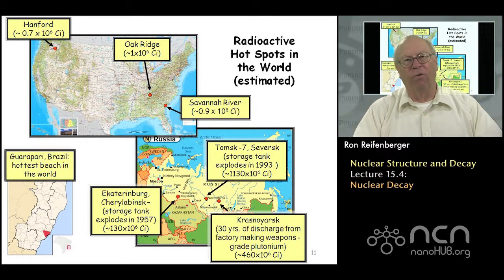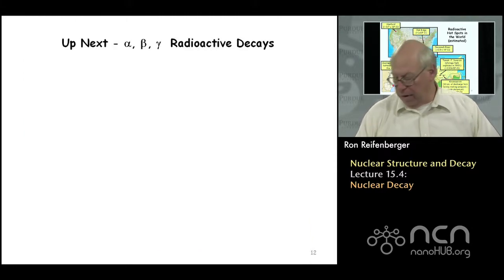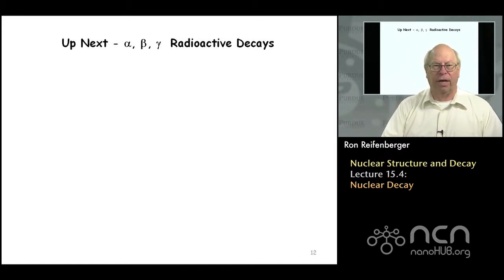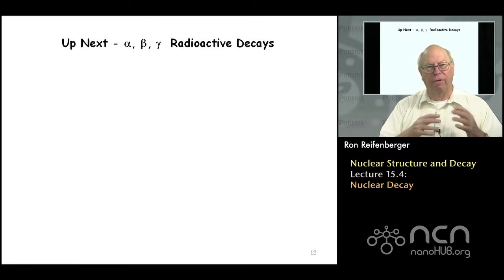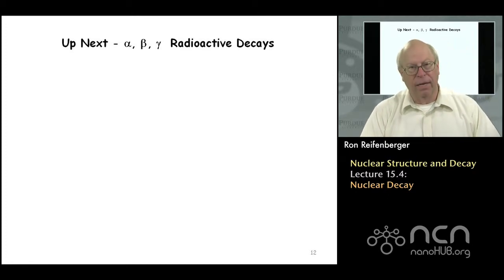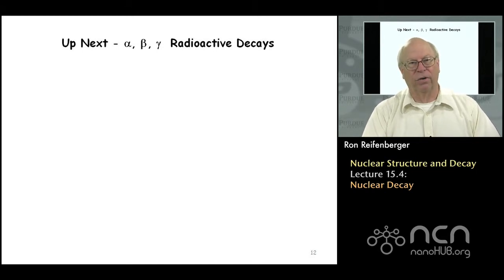This has been a brief overview trying to give you a sense of what nuclear decay is and how you measure radioactivity. In the next lecture we'll talk specifically about alpha, beta, and gamma decays and give you a sense for how those radioactive decays can be studied and understood. The arithmetic is pretty simple and will help you appreciate discussions about nuclear safety and nuclear reactors that you read about in the news.